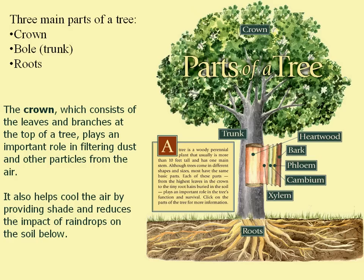Getting into the different parts of a tree — there are resources in Blackboard that go over some of these parts as well. A tree basically consists of three parts: the crown, the bole, which is also more commonly known as the trunk, and the root system. The crown really plays an important role in filtering dust and other particles from the air, as well as holding the leaves that are involved with photosynthesis producing the food for the tree. The crown also helps cool the air, provide shade, and reduces the impact of raindrops on the soil below.